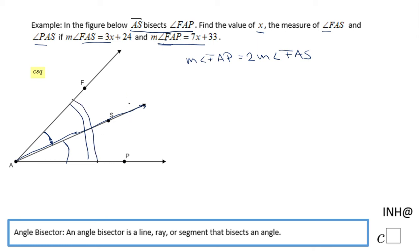Now we replace the measure of angles FAS and FAP with the expressions given. The measure of angle FAP is 7x + 33 equals 2 times (3x + 24). From this geometry statement, we have an algebraic equation. Using the distributive property, we have 7x + 33 = 6x + 48.